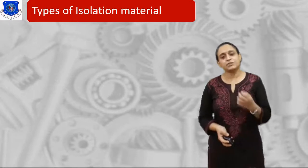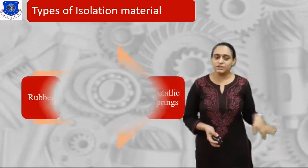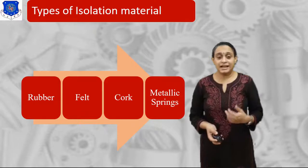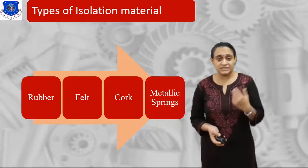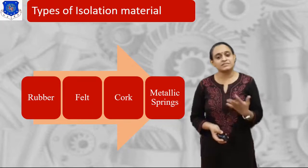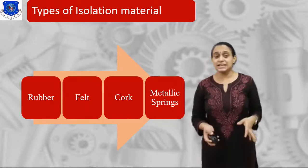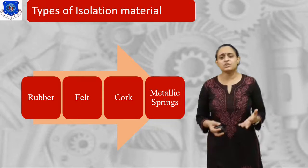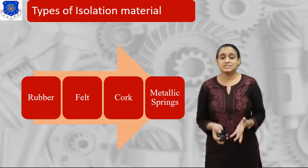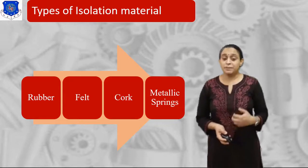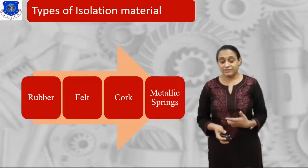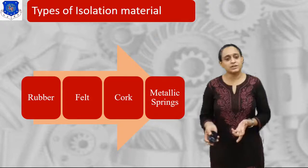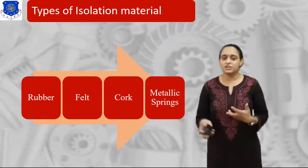Let us check the types of isolation materials. We can put rubber pads, felt material, cork, or metal springs underneath the machines. In mechanical and automobile systems, felt and cork materials are rarely used because they do not have sufficient capacity to absorb vibrations. But rubber pads and metal springs have tremendous capacity to absorb vibrations. Hence they are considered as isolation materials and are largely used in industries — specifically synthetic rubber and helical metal springs.